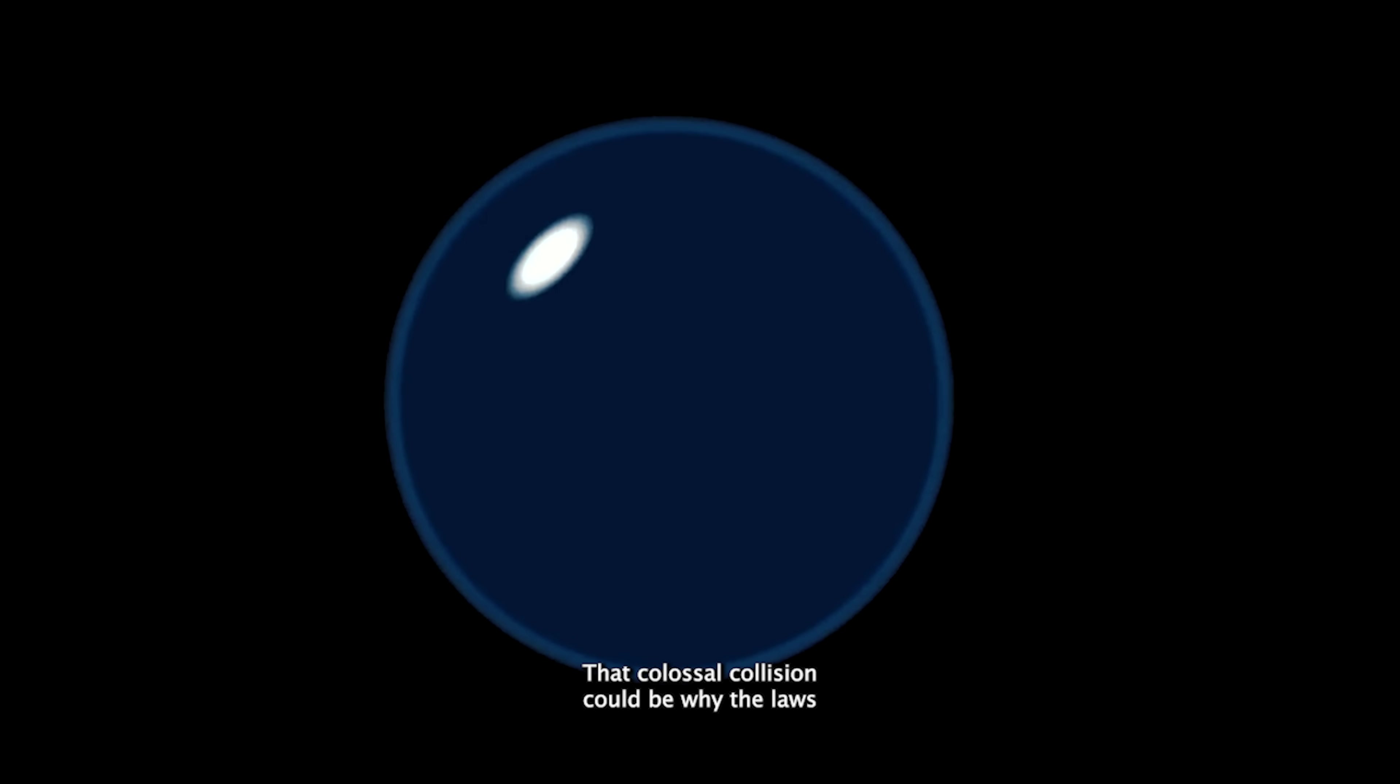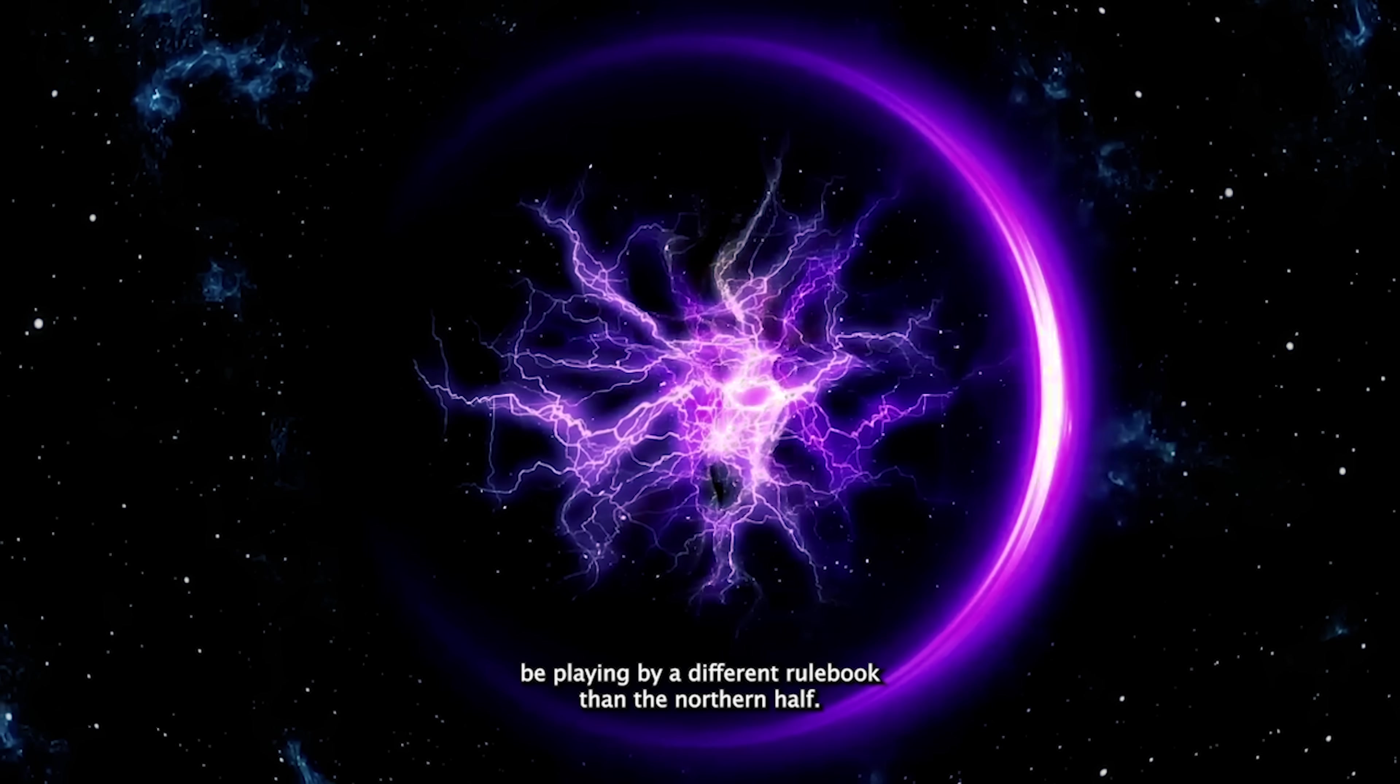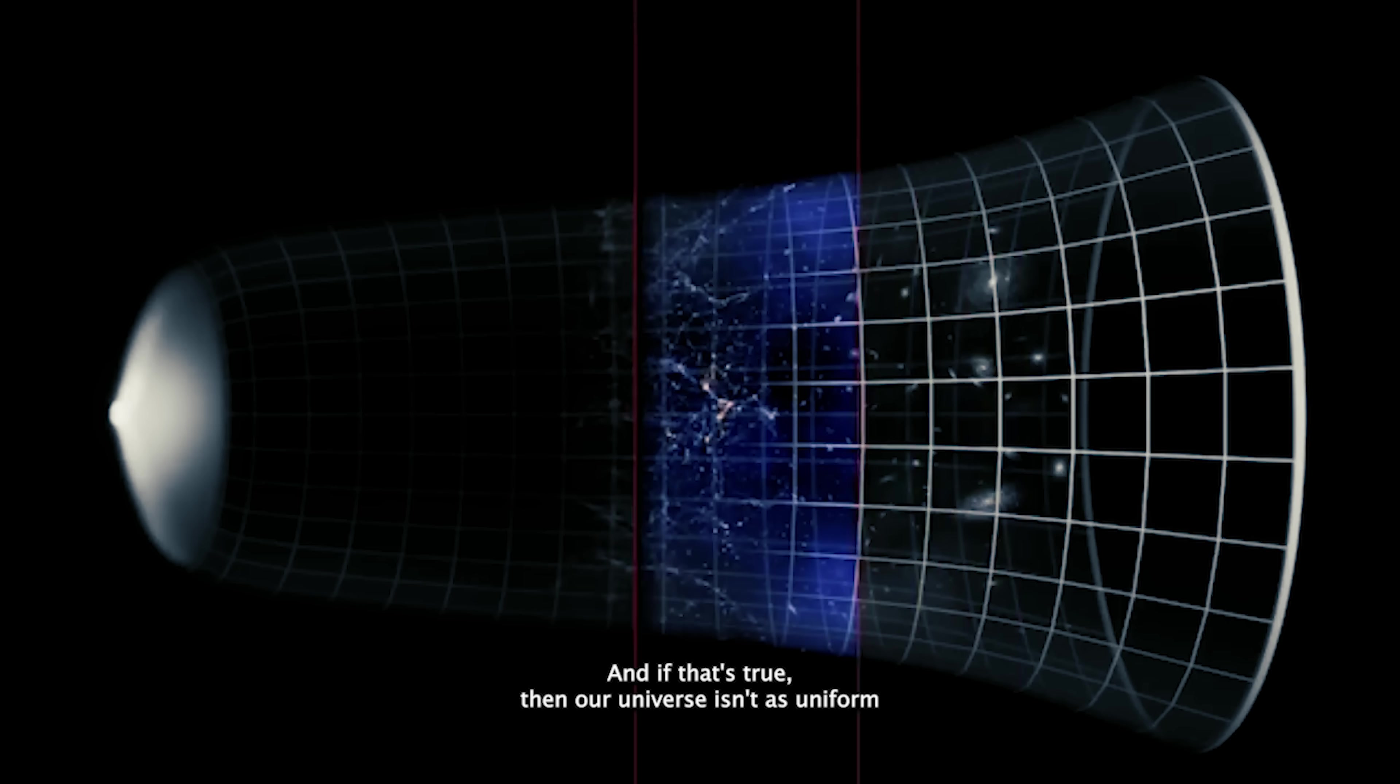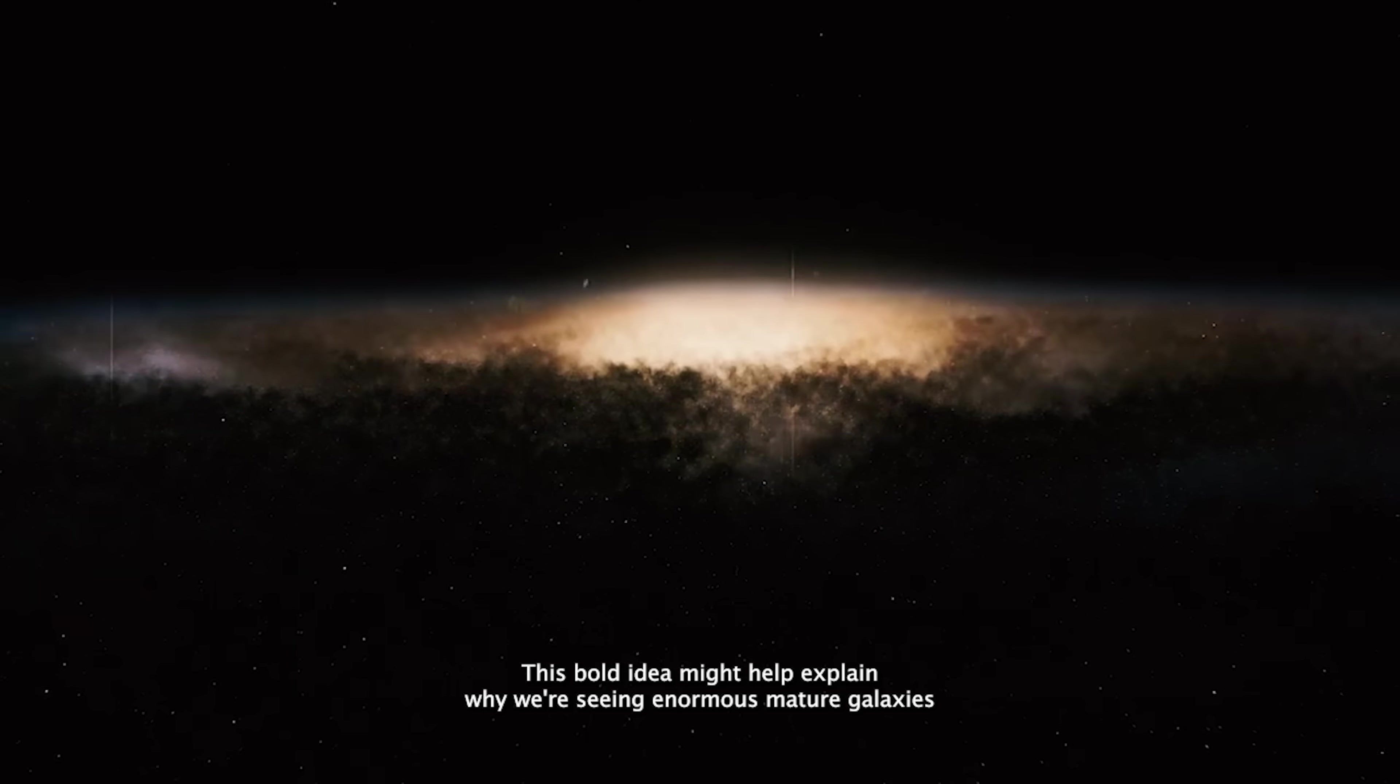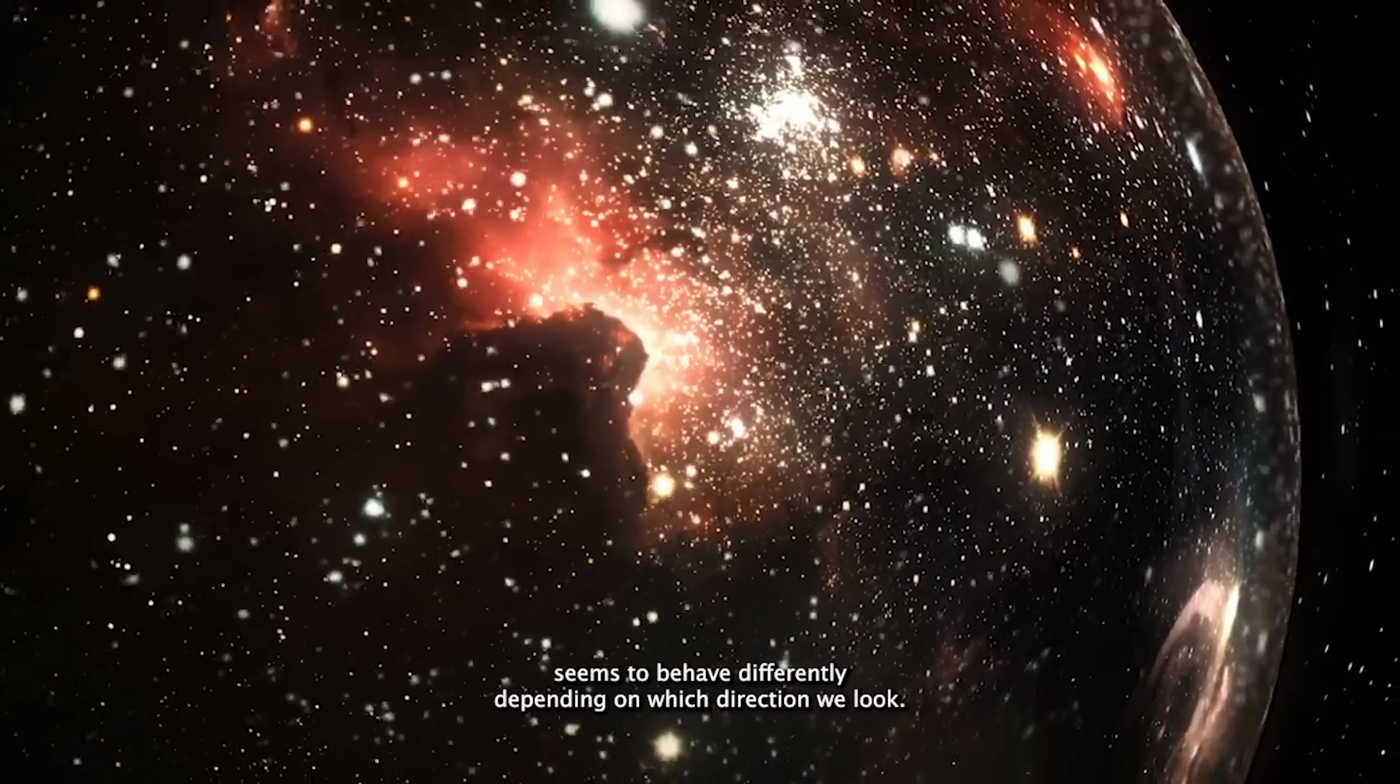That colossal collision could be why the laws of physics appear slightly different in different regions of the universe. In other words, the southern half of the cosmos might literally be playing by a different rule book than the northern half. And if that's true, then our universe isn't as uniform or as alone as we once thought. This bold idea might help explain why we're seeing enormous mature galaxies just a few million years after the Big Bang, and why the universe seems to behave differently depending on which direction we look.